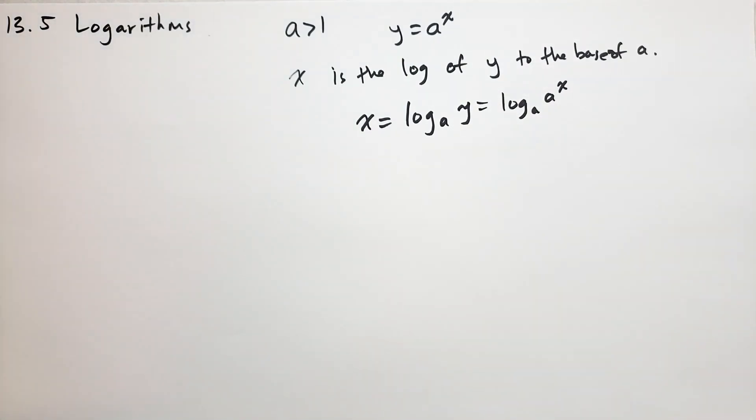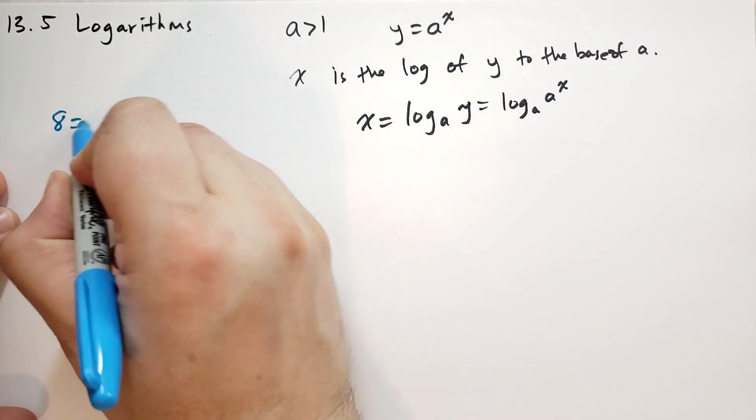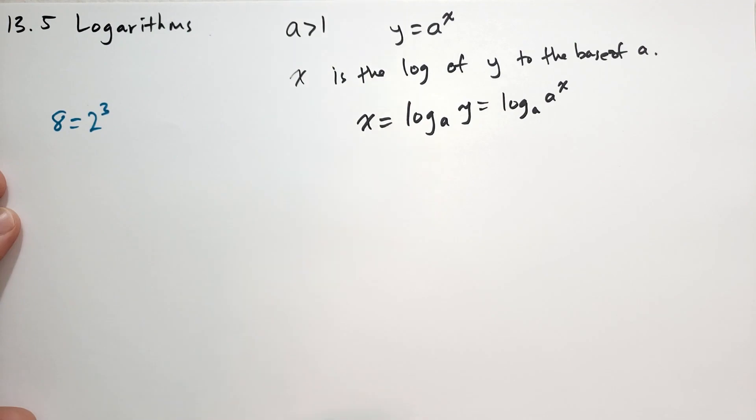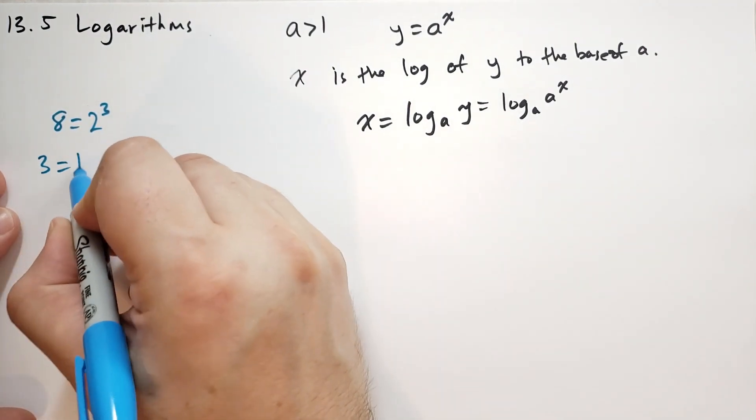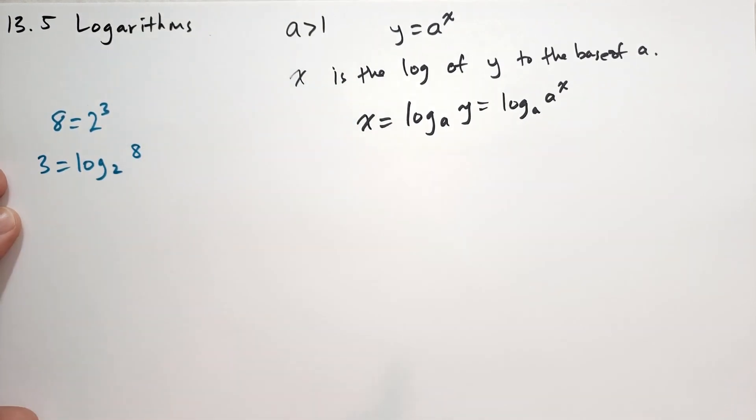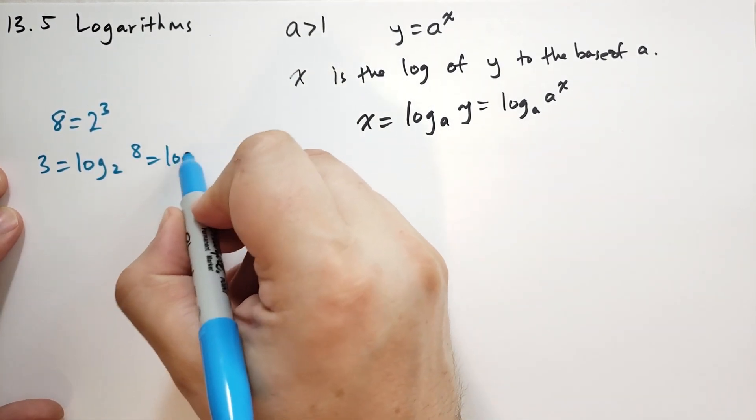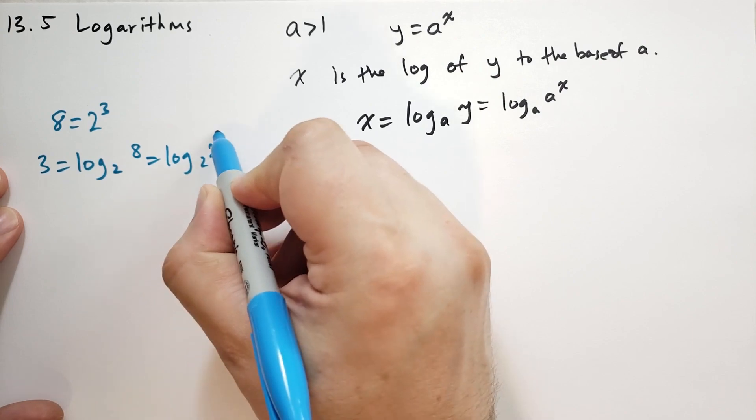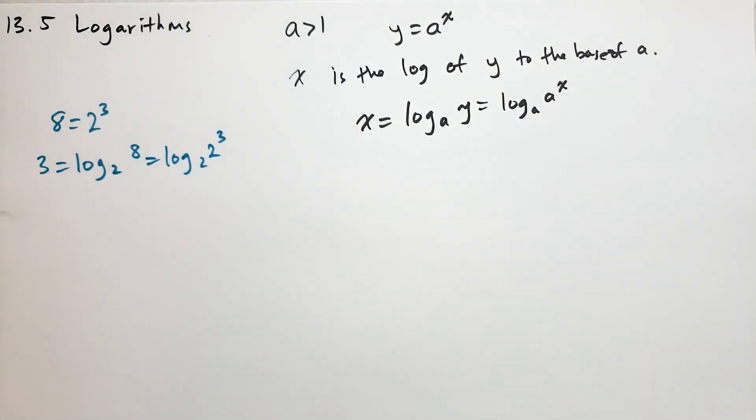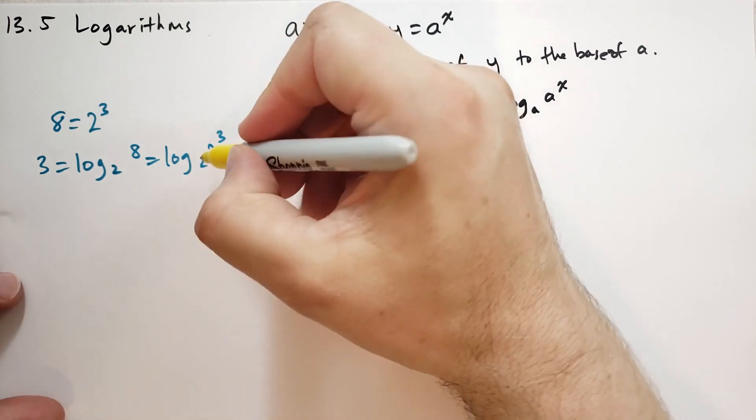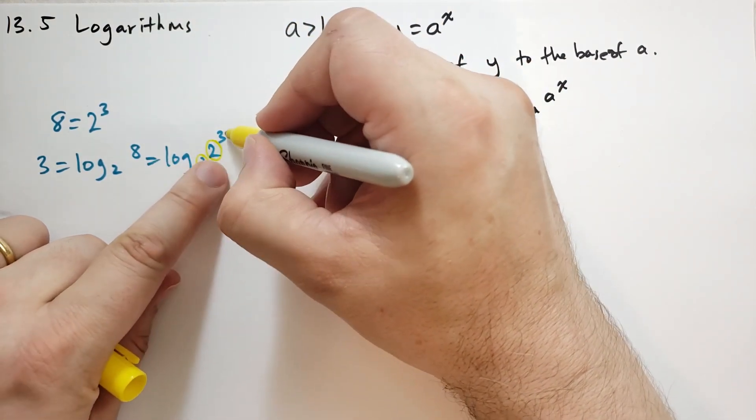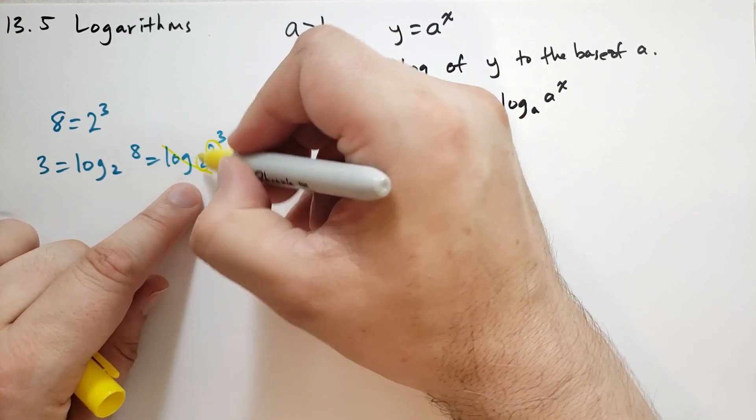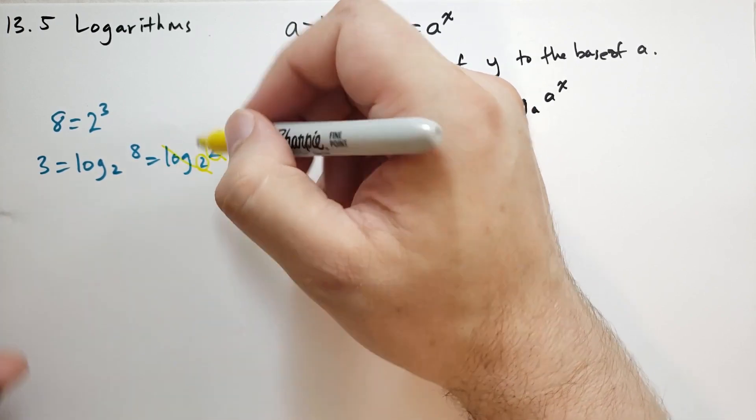As an example, he has a couple examples here that are fairly straightforward. We know that 8 is the same as 2 times 2 times 2, or 2 to the 3. So we see that 3 is equal to the log base 2 of 8, log base 2 of 2 to the 3. When I'm looking at logs, I look at this number here and this number here. If it's log base 2 of something raised to the power of, these things cancel and you're left with that 3 down below.